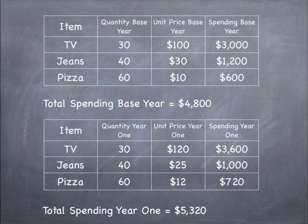In this example, we're going to take a look at three different items: TVs, jeans, and pizza. The quantity for the base year and the quantity for year one are going to be the same — 30 TVs, 40 jeans, and 60 pizzas.